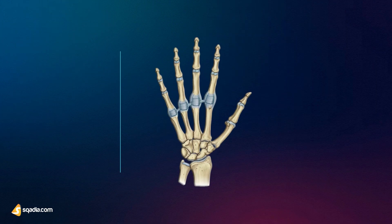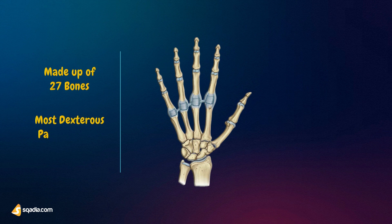The hand and wrist have a total of 27 bones arranged to roll, slide, and spin, allowing the hand to explore and control the environment and objects. That is why the hand is considered to be the most dexterous part of the body.